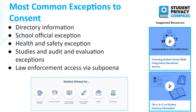There are a couple of videos linked specifically on directory information and the school official exception — those are the two exceptions educators need to know most about. Directory information is what allows you to call a student by their name, have books or playbills or announcements listing names, or announcements at sports games. Directory information in FERPA is considered generally harmless to release, even though it includes some sensitive information like address and phone number found in a PTA directory.